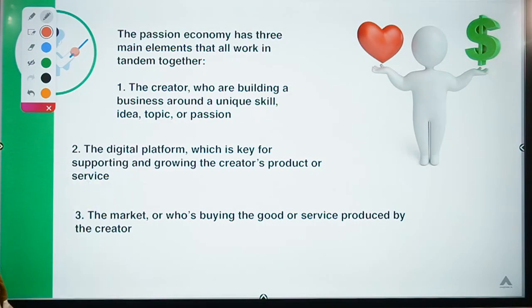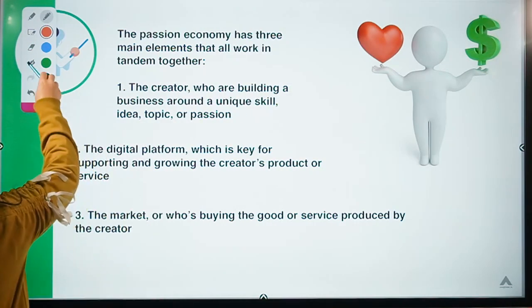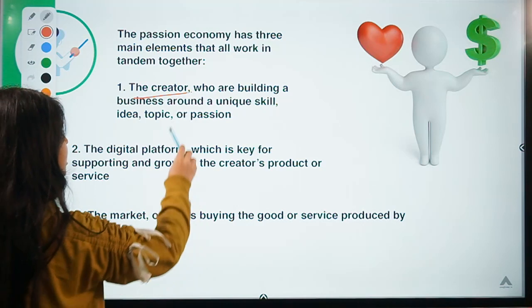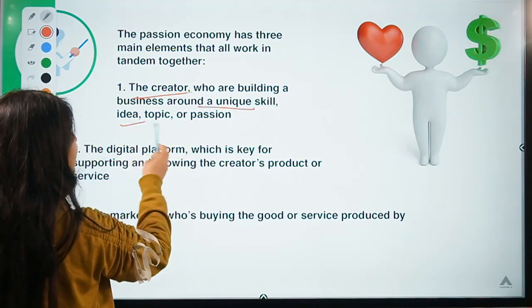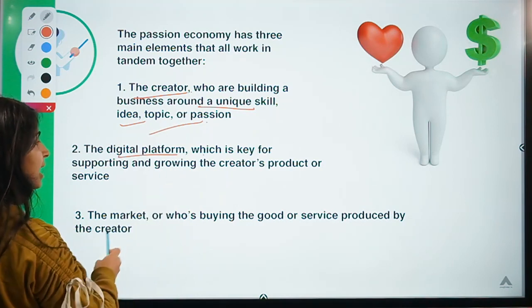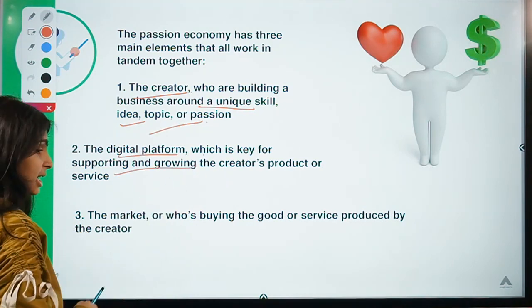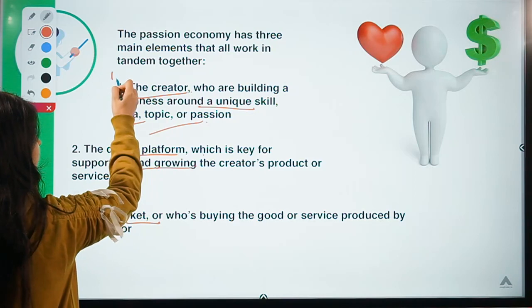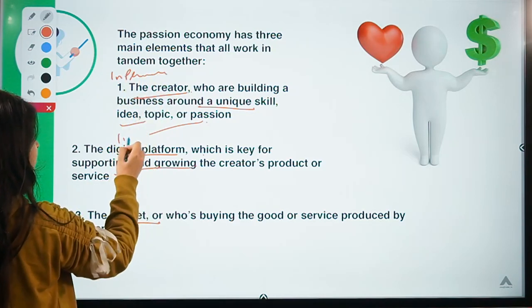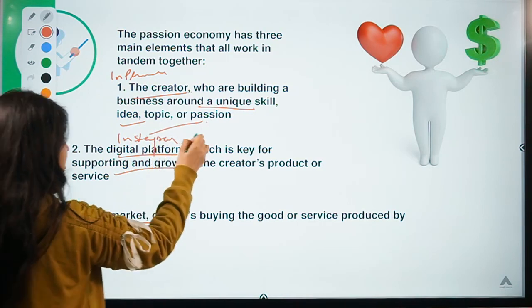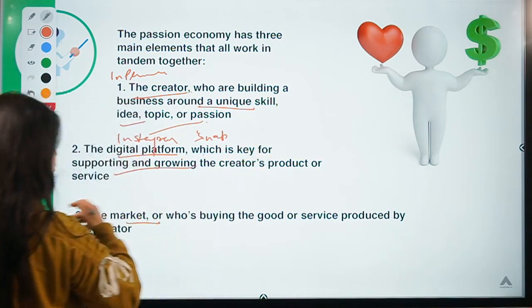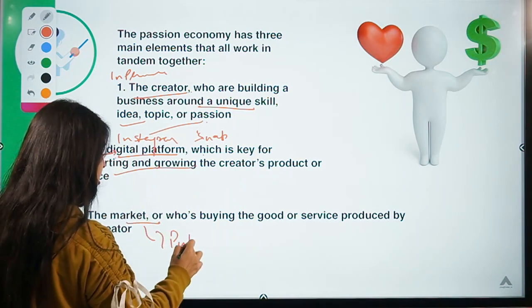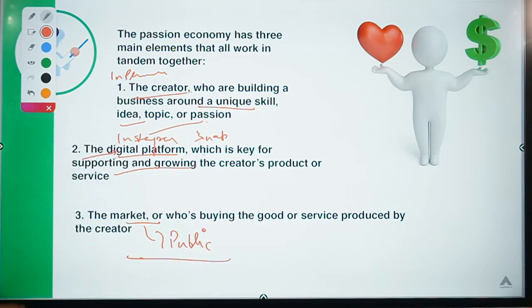Passion economy has three main elements: the creator — the person converting their passion into a profitable opportunity using a unique skill, idea, or topic; the digital platform, which is key for supporting these activities (e.g., Instagram, Snapchat, TikTok); and the market — the public following them. That is the passion economy.